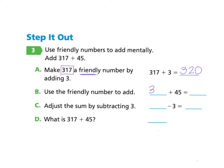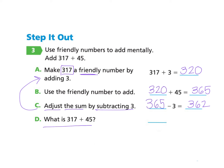Next, take the friendly number 320 and add 45. Pause if you'd like — the answer is 365. Then we adjust the sum by subtracting 3, because we added 3 earlier that wasn't part of the real number. So 365 minus 3 equals 362. Therefore, 317 plus 45 equals 362.